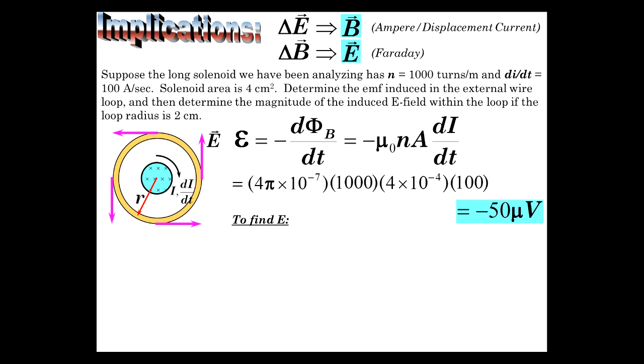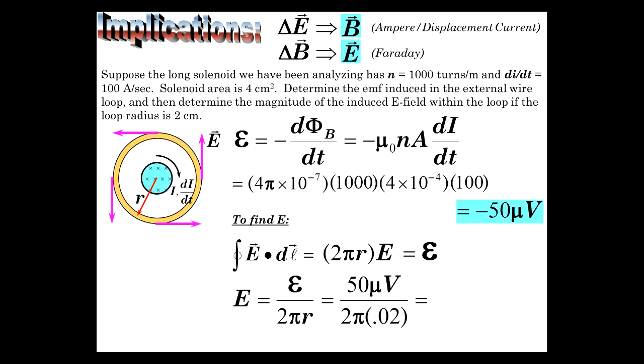So that's mu zero N the area times dI/dt gives us 50 microvolts. So that's the induced EMF. Now the electric field. This mysterious electric field produced by the changing magnetic field. Well, the integral closed integral of E dot dL is equal to 2πr. That's the path length times that constant E. And that's the induced EMF which we already know. So the electric field is EMF over 2πr. There's the numbers. There's the value. This many volts per meter solves the problem.